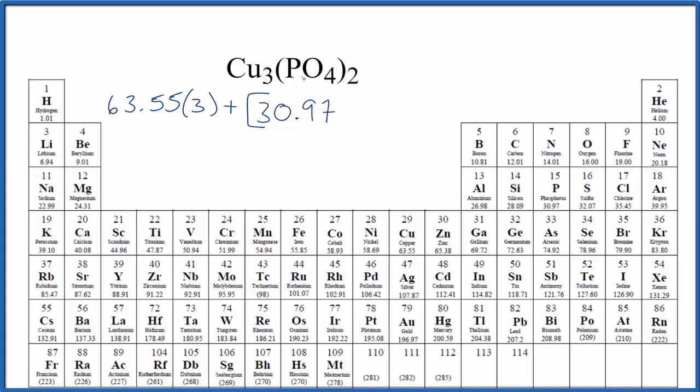Then oxygen here, oxygen is 16.00 grams per mole, but we have four of these oxygen atoms so we'll put a four, multiply that by four. And then let's close our brackets here and we have two phosphates so all of this here is the phosphate, we'll put a two out here.